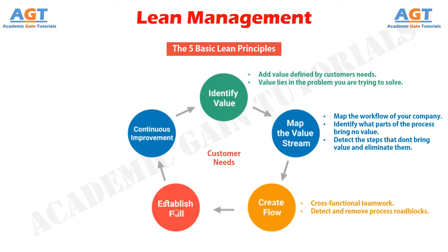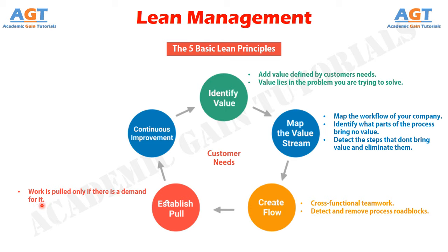Number four: create a pull system. Having a stable workflow is a guarantee that your teams can deliver work tasks much faster with less effort. However, in order to secure a stable workflow, make sure to create a pull system. In such a system, work is pulled only if there is a demand for it. This lets you optimize resource capacity and deliver products or services only if there is an actual need. Take a restaurant for example: you go there and order a pizza. The baker pulls your order and starts making your pizza. He doesn't prepare tons of dishes in advance because there isn't actual demand, and those dishes can turn into a waste of resources.